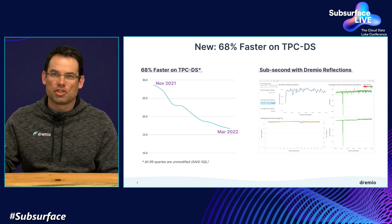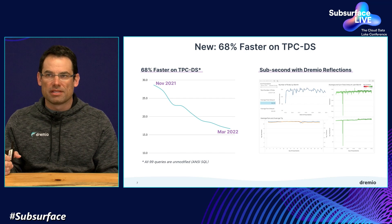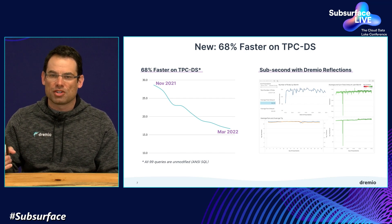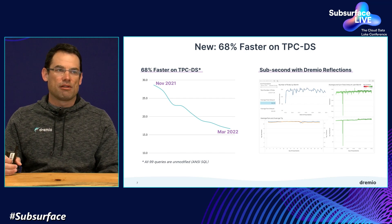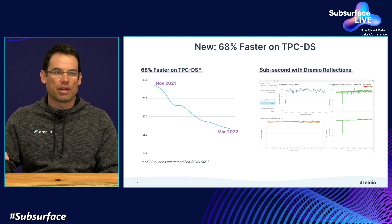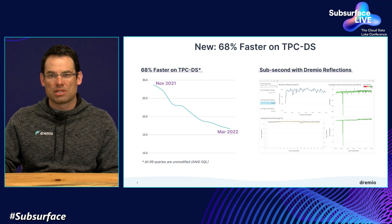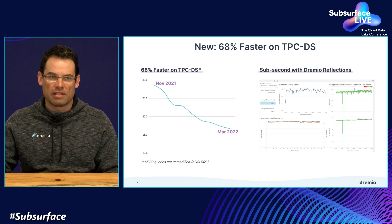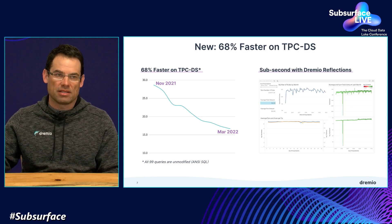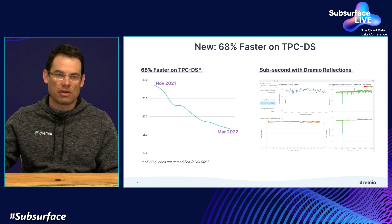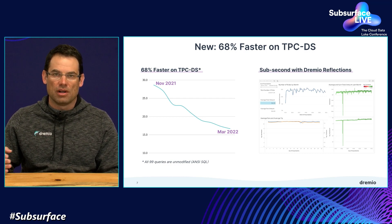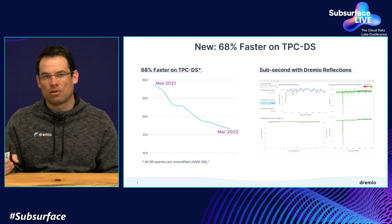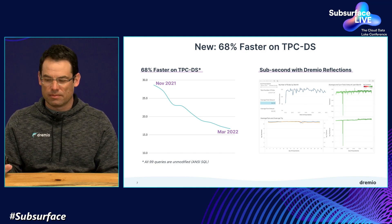Also, in addition to the raw performance, we provide sub-second response times with Dremio Reflections. This is what allows companies to run their actual mission-critical BI dashboards directly on the lake, without having to move data into warehouses, BI extracts, cubes, aggregation tables, and all these additional data structures that often have to be created in order to serve BI workloads.